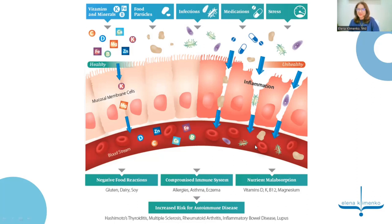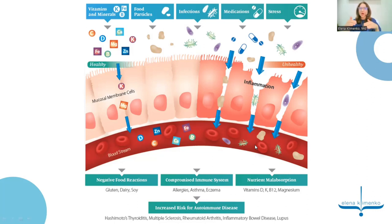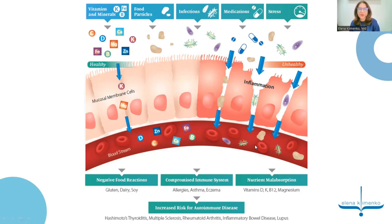At the same time, our immune system becomes so irritated that we start developing allergies, asthma, and eczema. We're also in a state of nutritional malabsorption, meaning we don't even have the building blocks and nutrients necessary to repair the inflamed intestinal barrier. If it stays unchecked for a long period of time, it will increase our risk of developing autoimmune disorders. Hashimoto's thyroiditis is probably the most common, but we see more and more development of multiple sclerosis, rheumatoid arthritis, inflammatory bowel disease, and many other autoimmune illnesses.